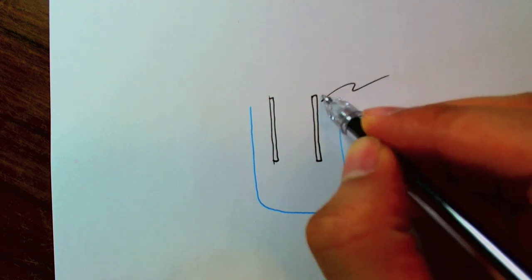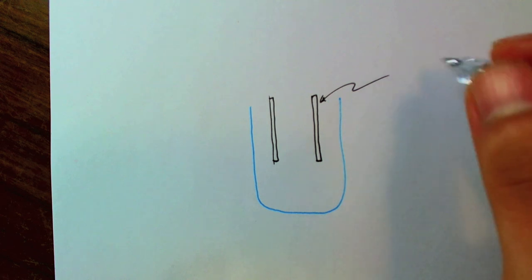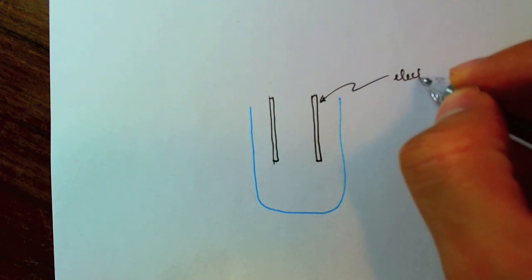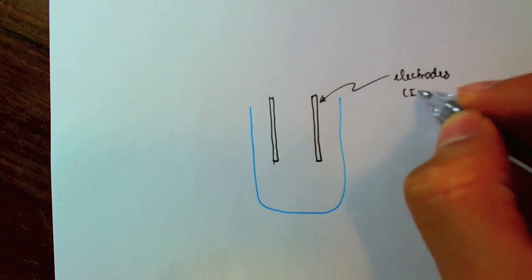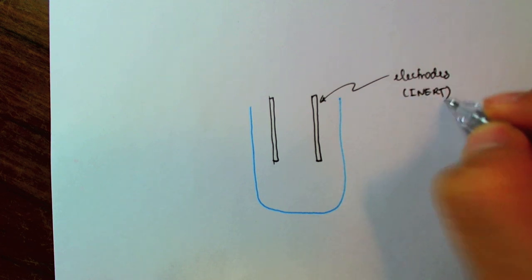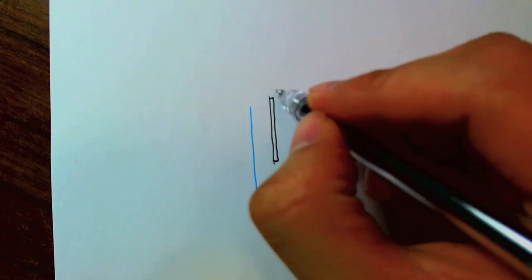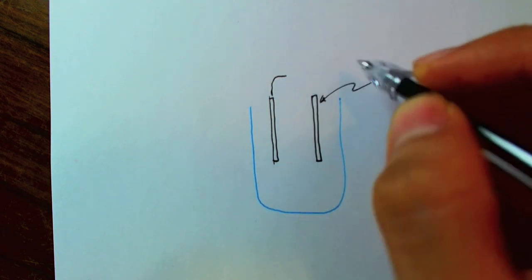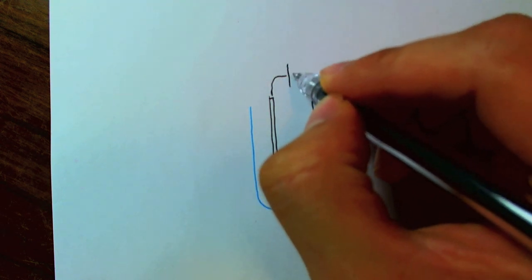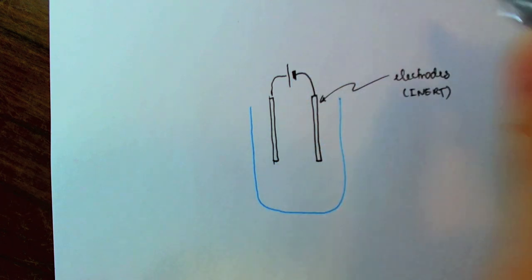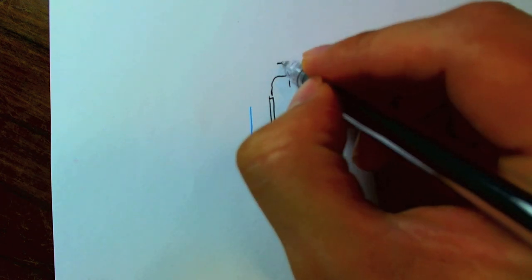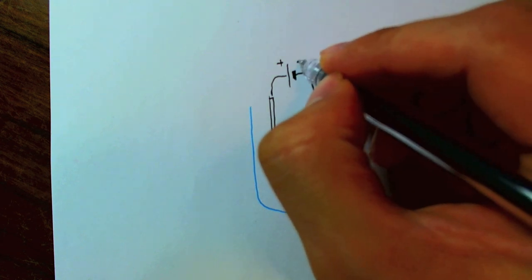So, these carbon rods are usually made of, well, these carbon rods are what we call the electrodes. And I'm using carbon in this case which makes them inert, meaning they're not reactive. And next I'll connect them to a cell. So, the longer end of the cell is the positive end, the shorter end is the negative end.